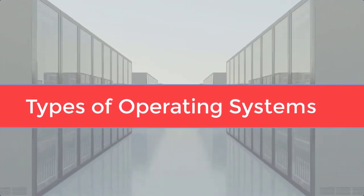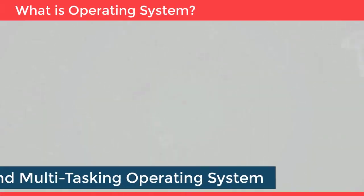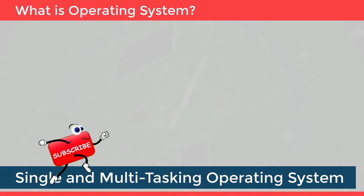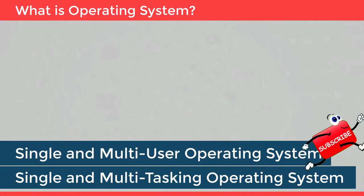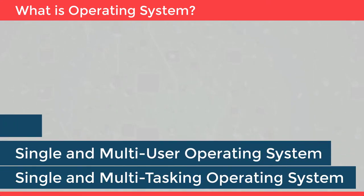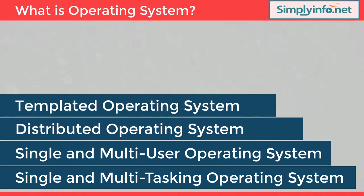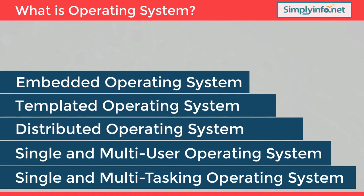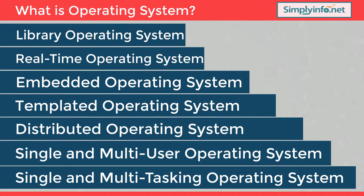Types of operating systems include: single and multitasking operating systems, single and multi-user, distributed, templated, embedded, real-time, and library operating systems.